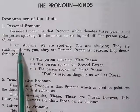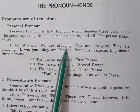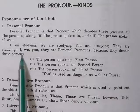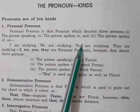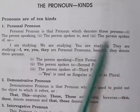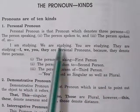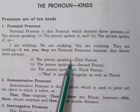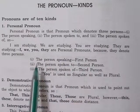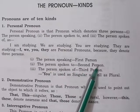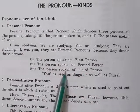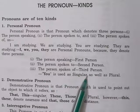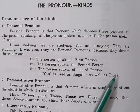For example: I am studying, we are studying, you are studying, they are studying. I, we, you, they are personal pronouns because they denote three persons. The person speaking is first person, the person spoken to is second person, the person spoken of is third person. You is used as singular as well as plural.